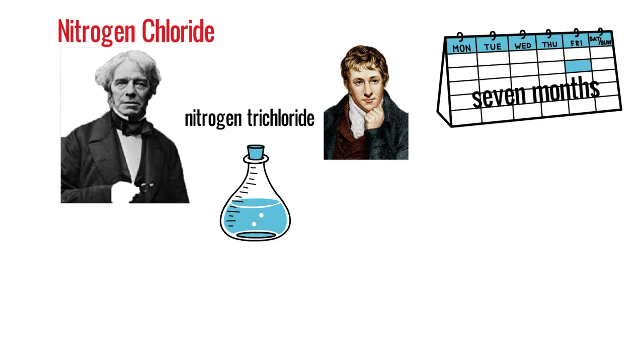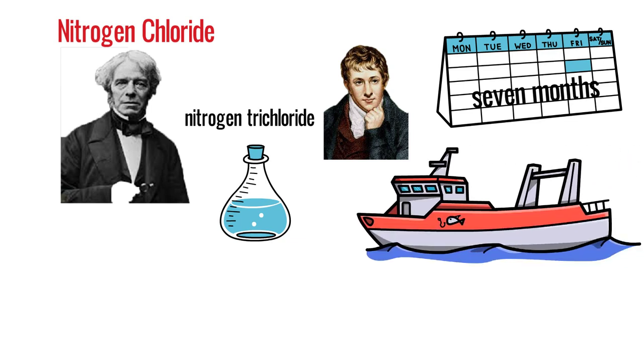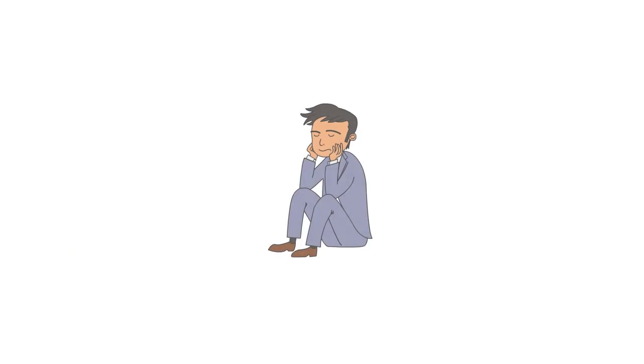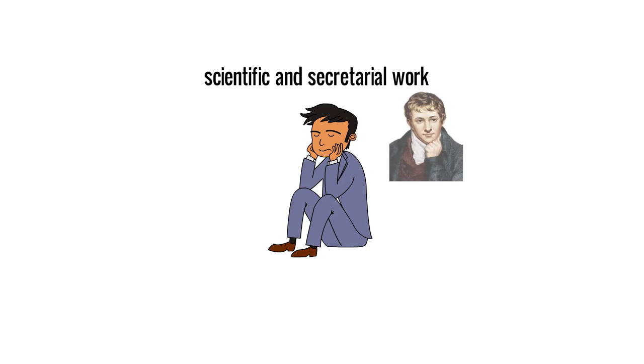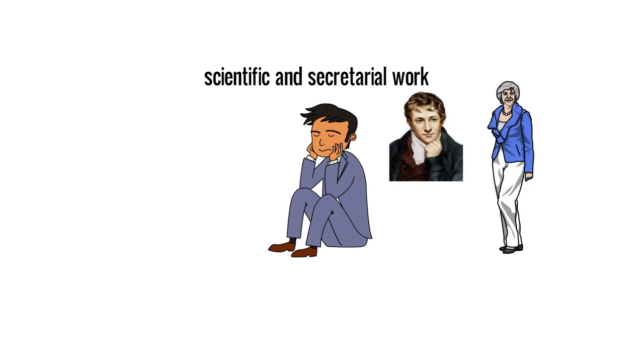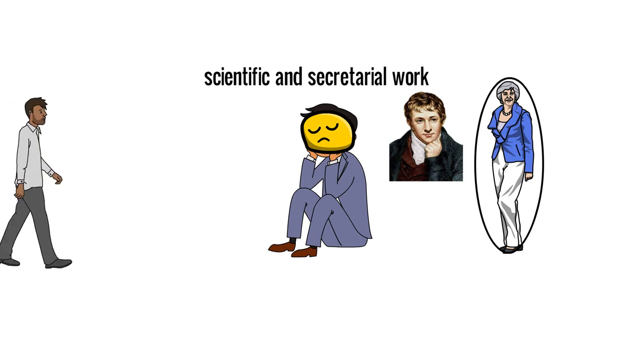After just seven months at the Royal Institution, Davy took Faraday as his secretary on a tour of Europe that lasted 18 months. He was however unhappy for much of the tour, because in addition to his scientific and secretarial work, he was required to be a personal servant to Davy and Davy's wife, which he did not enjoy. Davy's wife refused to treat Faraday as an equal because he had come from a lower-class family.